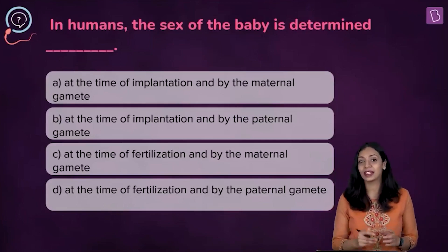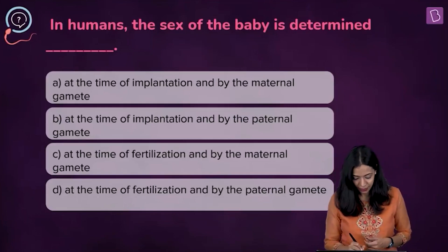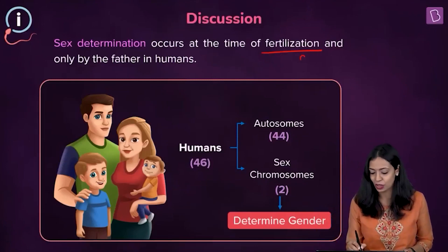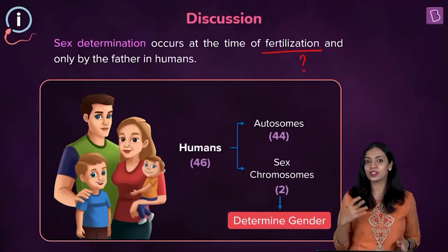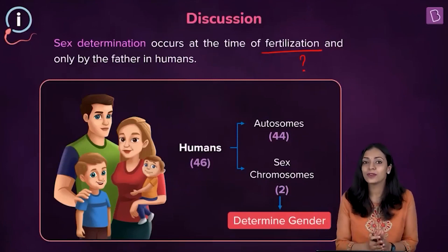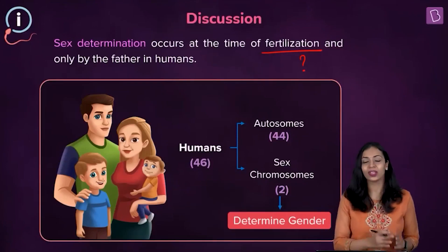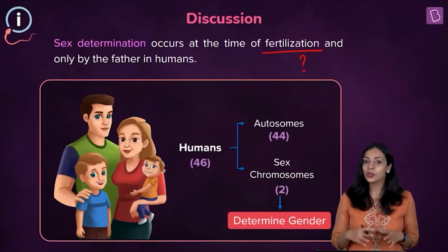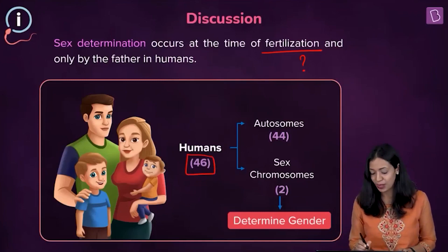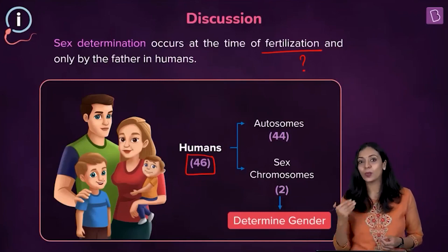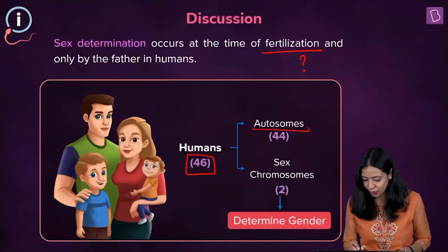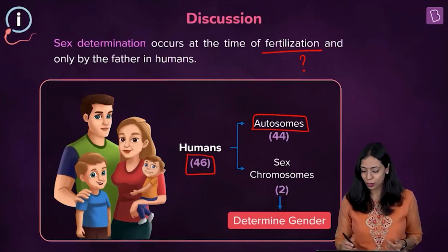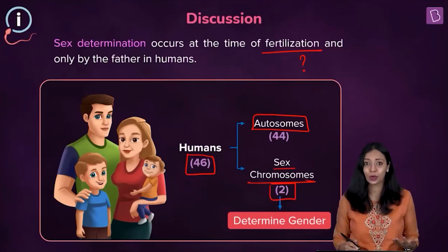Sex determination in humans occurs at the time of fertilization, when the male and female gametes fuse to form the diploid zygote. Humans have a total of 46 chromosomes in 23 pairs: 22 pairs (44 chromosomes) are autosomes, and the last pair are the sex chromosomes, which determine gender.